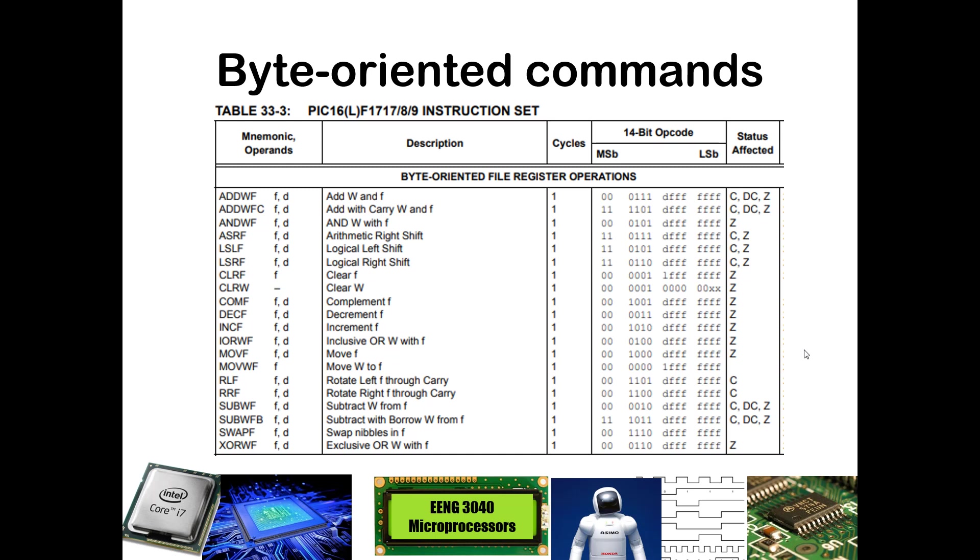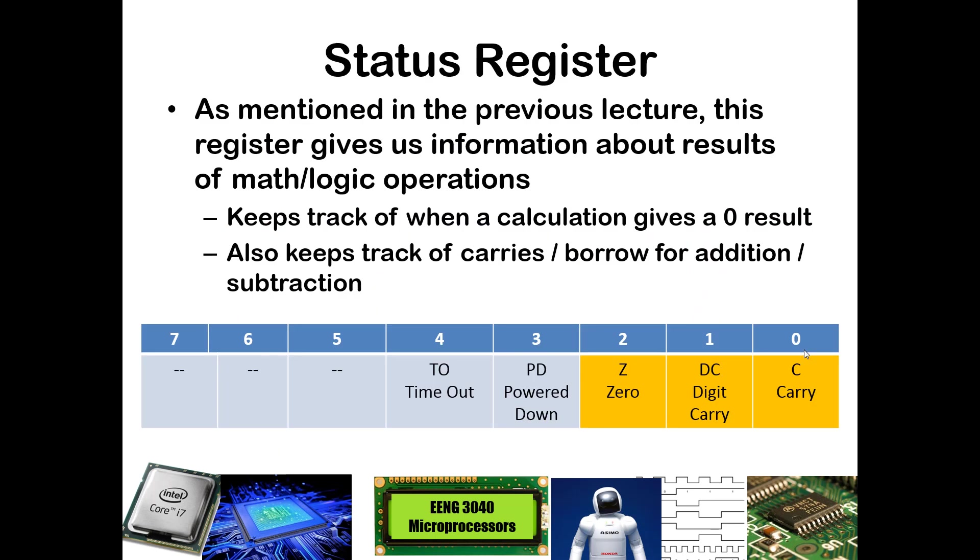It's important to note that various bits of the status register can give us some indication of what happened with some of these arithmetic commands. We'll see some examples of that as we move on through. Before we begin, we must remember what those three bits of the status register are. Bit 2 of the status register is the Z bit, short for zero.